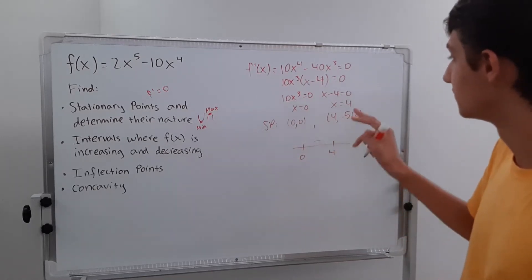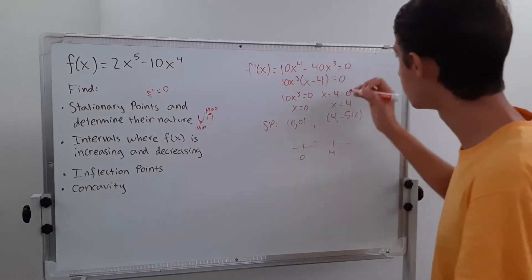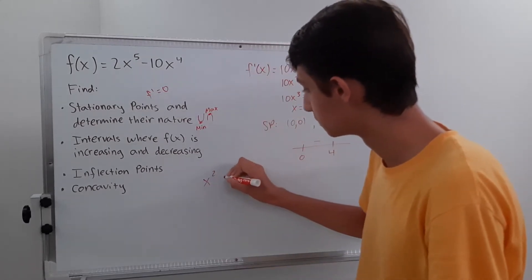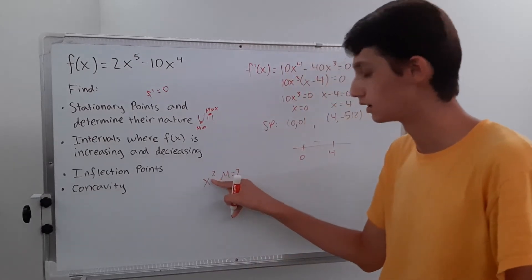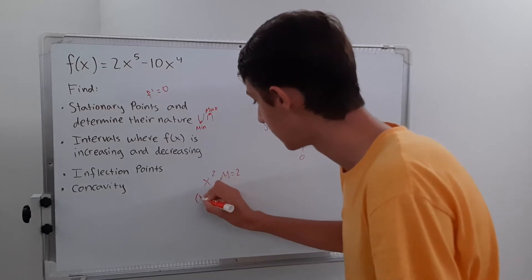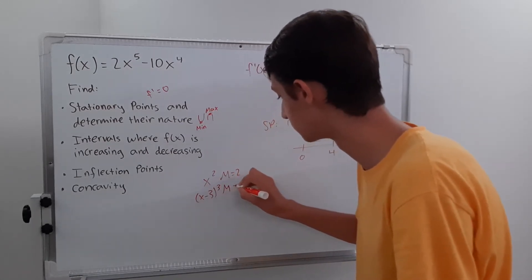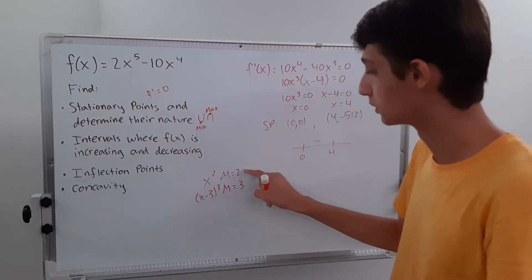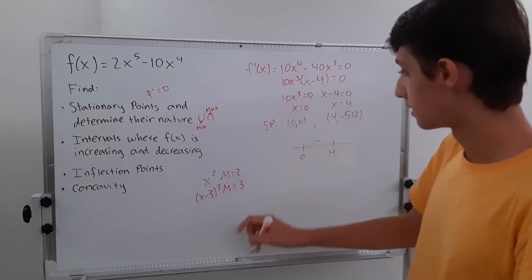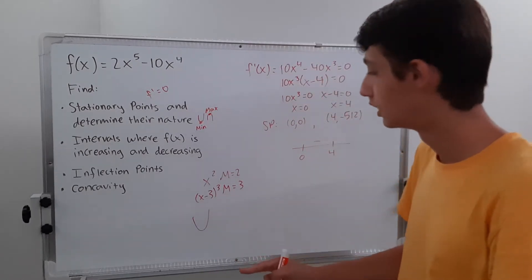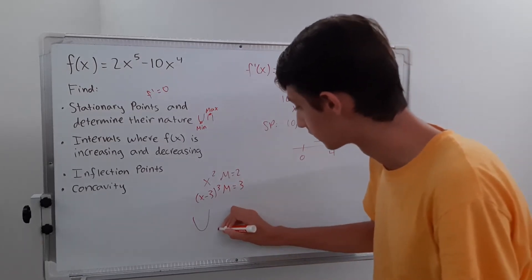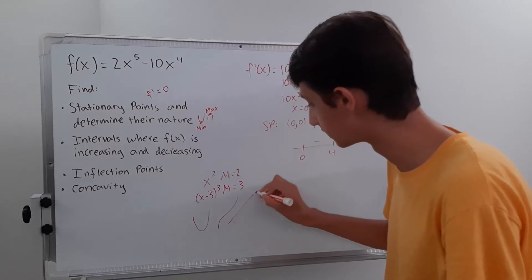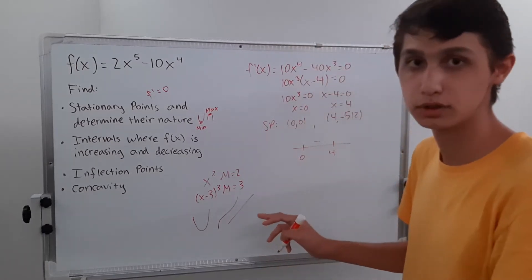Multiplicities work like this: if you have x squared, that has a multiplicity of two because the exponent is the multiplicity. If you have x minus three cubed, that has a multiplicity of three. When you have an even multiplicity — two, four, six — your graph looks like a parabola, like x squared. If you have a multiplicity of three, you get a snake shape and the sign switches from positive to negative. You can think of y equals x as a straight line with multiplicity one — it goes from negative to positive.